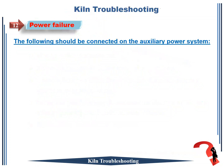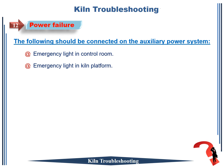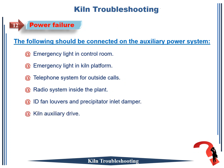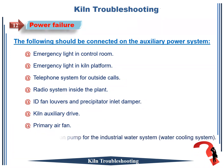The following should be connected on the auxiliary power system: 1. Emergency light in control room. 2. Emergency light in kiln platform. 3. Telephone system for outside calls. 4. Radio system inside the plant. 5. ID fan louvers and precipitator inlet damper. 6. Kiln auxiliary drive. 7. Primary air fan. 8. Recirculation pump for the industrial water cooling system.